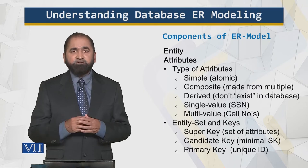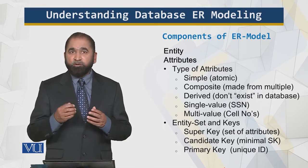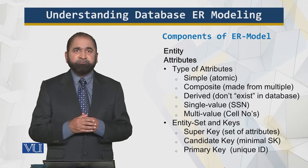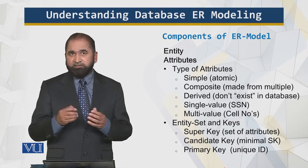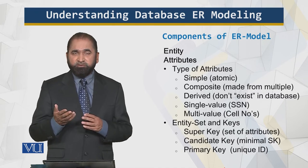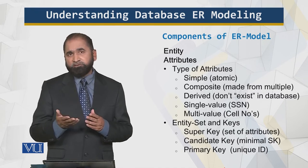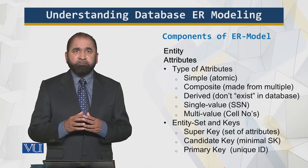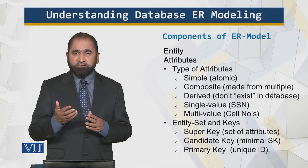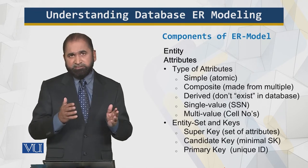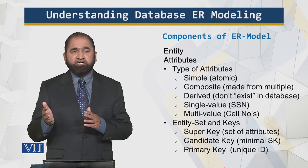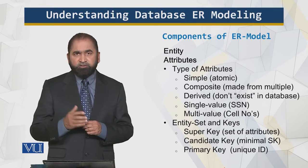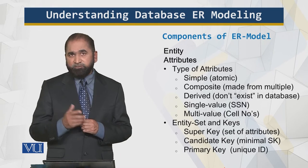An entity has attributes. Attributes are the properties. For example, a student is an entity and a course is an entity. The attributes of a student could be the name, the address, the GPA, and the courses the student takes — that is the relational aspect which I will cover. Let's very briefly look at some of the types of attributes.